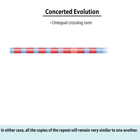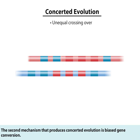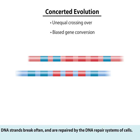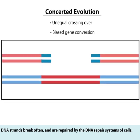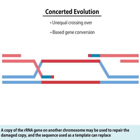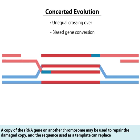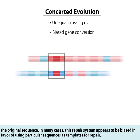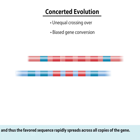In either case, all the copies of the repeat will remain very similar to one another. The second mechanism that produces concerted evolution is biased gene conversion. This mechanism can be much faster than unequal crossing over and has been shown to be the primary mechanism for concerted evolution of ribosomal RNA genes. DNA strands break often and are repaired by the DNA repair systems of cells. A copy of the ribosomal RNA gene on another chromosome may be used to repair the damaged copy, and the sequence used as a template can replace the original sequence. In many cases, this repair system appears to be biased in favor of using particular sequences as templates for repair, and thus the favored sequence rapidly spreads across all copies of the gene.